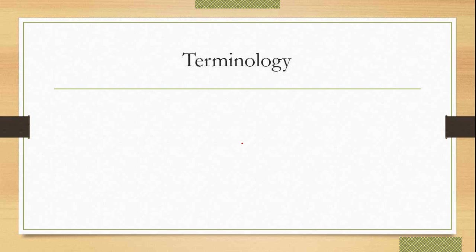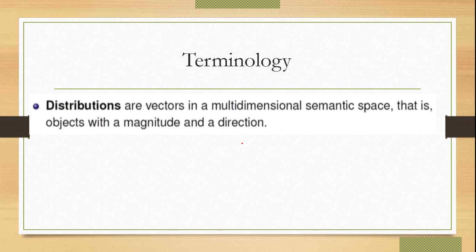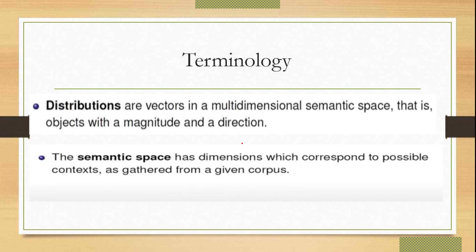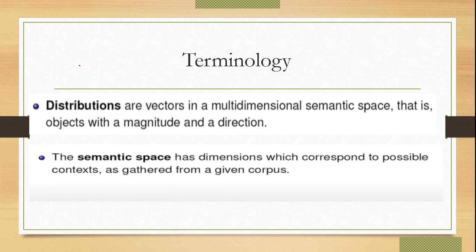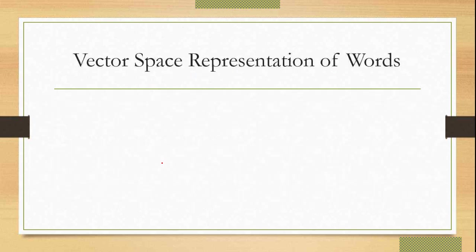The alternative names for DSM, the Distributional Semantic Model, are: corpus-based semantic, statistical semantic, geometrical model of meaning, vector semantic, or word space model. Whatever word or sentence you have — a sentence being a combination of words w1, w2, w3, w4, and so on — you represent it as a vector. Then the vector is obtained through the statistical analysis of the linguistic context of the word. Now, what is the vector space representation of the word?